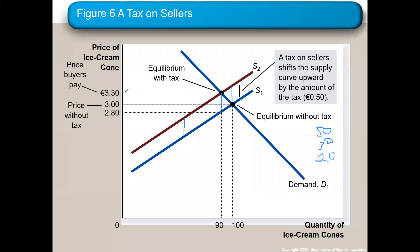If you look at this rectangle here, that is your tax revenue box. The height is 50 cents and the base is 90, so it's 0.50 times 90. The government would make $45 of tax revenue — 50 cents a cone, 90 cones, $45. This is your tax revenue box.